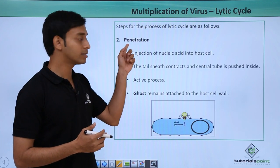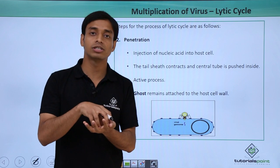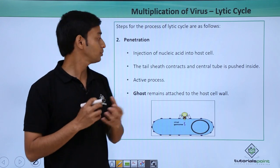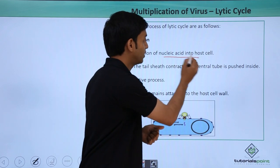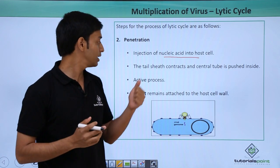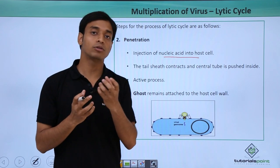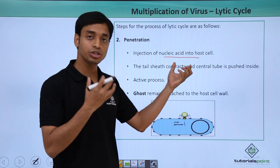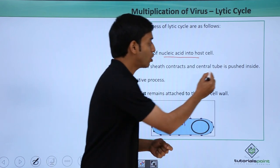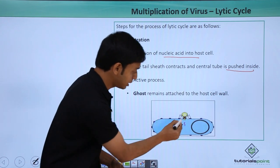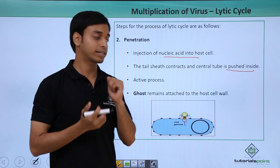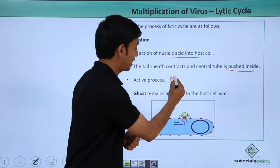After absorption, the second step is penetration. The virus has firmly attached itself to the surface of the host organism. Now the tail fiber penetrates into the host organism and the nucleic acid, which is the genome of the virus particle, is injected inside the host. The tail sheath, made up of proteins, contracts and reduces its size, acting like an injection, pushing the central tube inside the host organism.